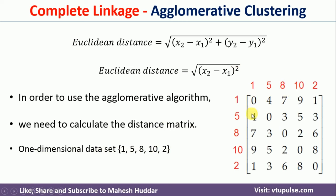We calculate the pairwise distances. For example, the distance between point 1 and itself is the square root of (1 minus 1) squared, which is 0. The distance between point 2 (value 5) and point 1 (value 1) is the square root of (5 minus 1) squared, which is 4. Similarly, the distance between point 3 (value 8) and point 1 is the square root of (8 minus 1) squared, giving 7. Distances like 9 and 1 are calculated similarly using this formula.